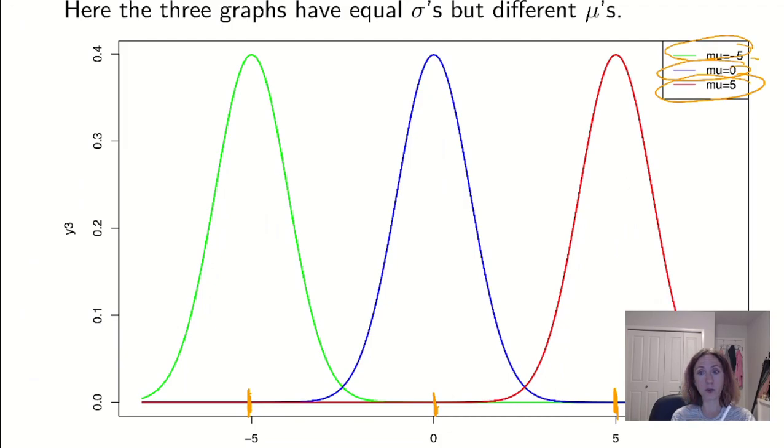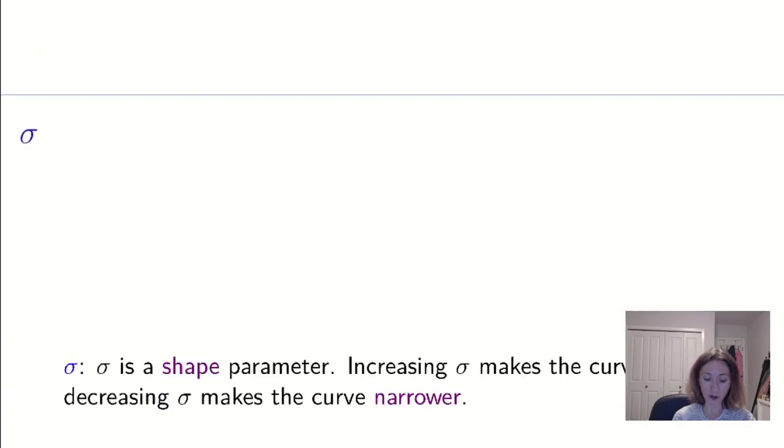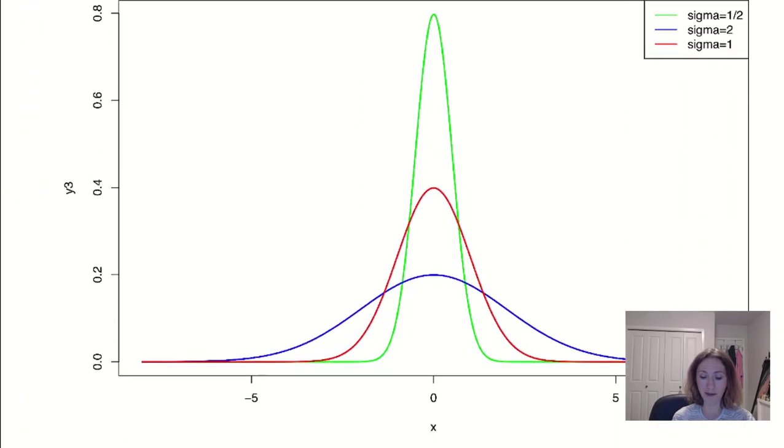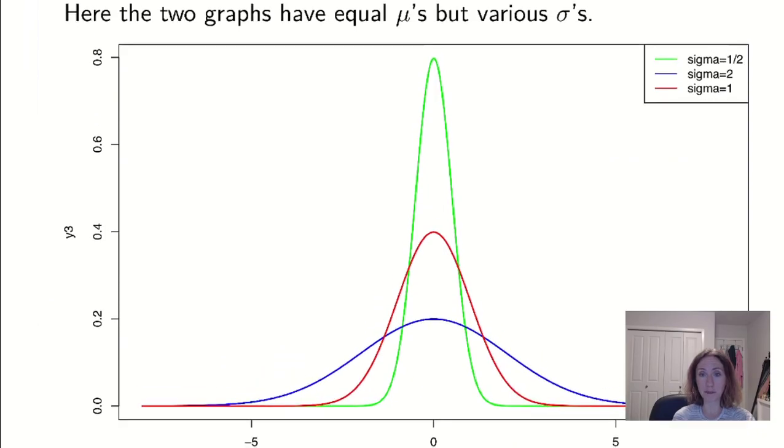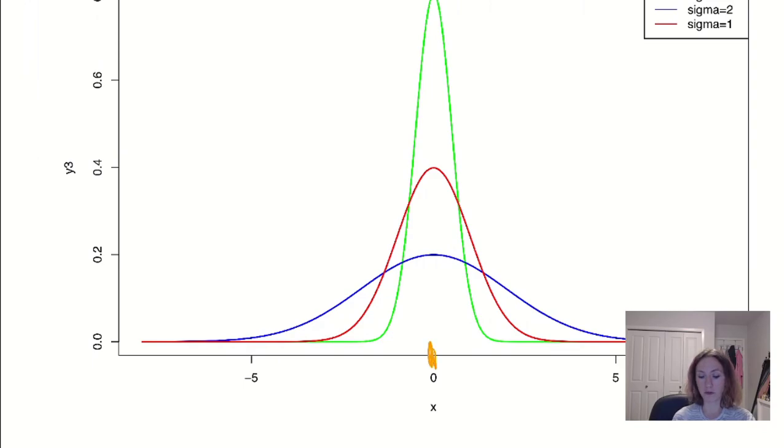If equal sigmas means same shape, that must mean that if I kept mu constant but I changed my sigma, it is going to change the shape. So sigma is the shape parameter, it's about variation from the mean. The bigger the sigma the wider the curve. The smaller the sigma the narrower the curve. So if we look here I have three different normal distributions. They all have the same mu because they're all centered here at zero. But I've given them different levels of sigma.